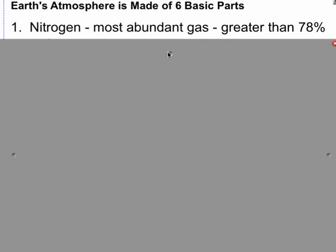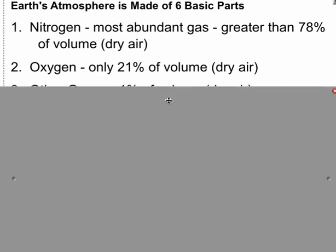The most abundant gas is nitrogen — 78% roughly of our atmosphere at any given sample time is made up of nitrogen, an inert gas. Oxygen is number two, about 21% of the atmosphere currently. Very different than what the early Earth was.